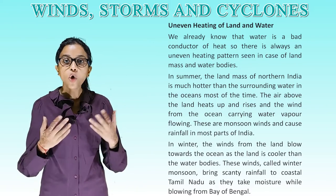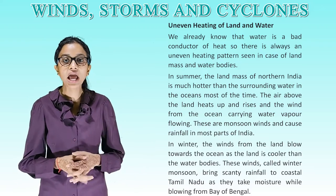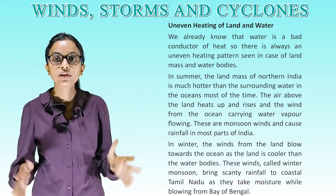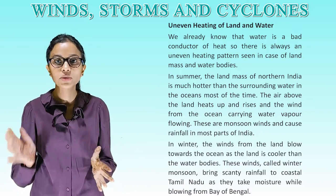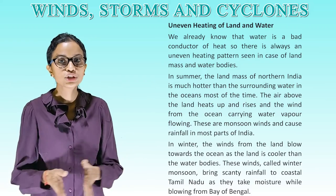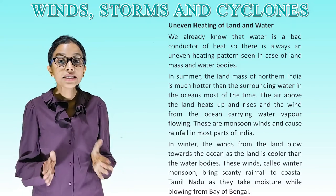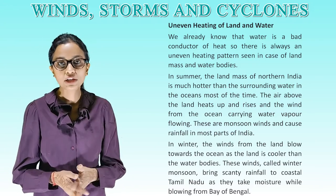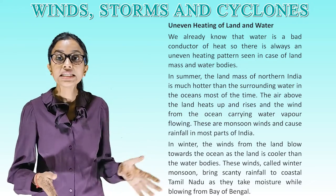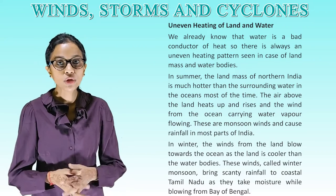Uneven heating of land and water: Water is a bad conductor of heat, so there is always an uneven heating pattern between landmass and water bodies. In summer, the landmass of northern India is much hotter than the surrounding ocean water. The air above the land heats up and rises, and wind from the ocean carrying water vapor flows in — these are monsoon winds and cause rainfall in most parts of India. In winter, winds from the land blow towards the ocean as the land is cooler than the water bodies. These winter monsoon winds bring scanty rainfall to coastal Tamil Nadu as they take moisture while blowing from the Bay of Bengal.